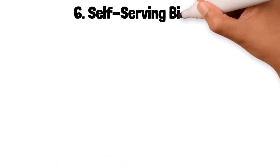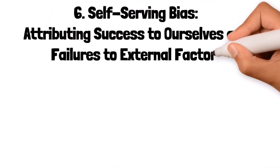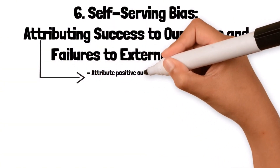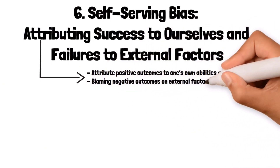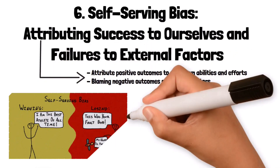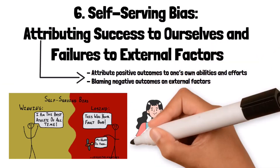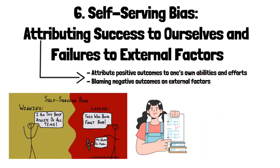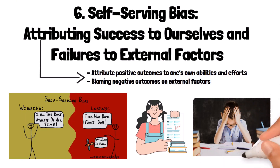6. Self-Serving Bias: attributing success to ourselves and failures to external factors. Self-serving bias is the tendency to attribute positive outcomes to one's own abilities and efforts while blaming negative outcomes on external factors. This bias helps maintain self-esteem but can lead to distorted perceptions of reality. For example, if a student does well on an exam, they might attribute their success to their intelligence and hard work. However, if they perform poorly, they might blame the exam's difficulty or the teacher's unfair grading.